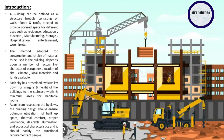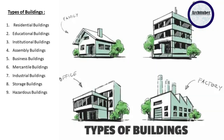It should satisfy the functional requirements of people. As discussed, there are different types of buildings and each typology has different construction materials and construction techniques. The types of buildings are: residential, educational, institutional, assembly, business, mercantile, industrial, storage, and hazardous buildings. Now we will see each of these types of buildings in detail.